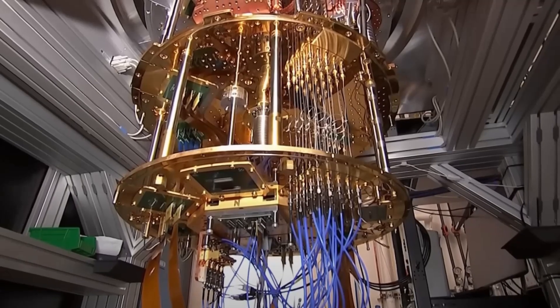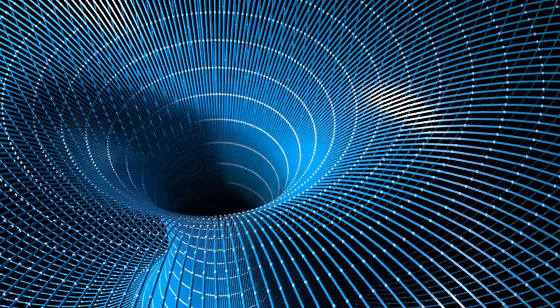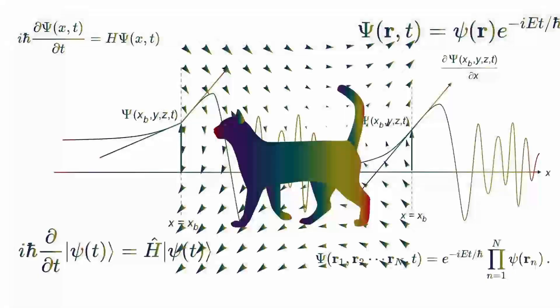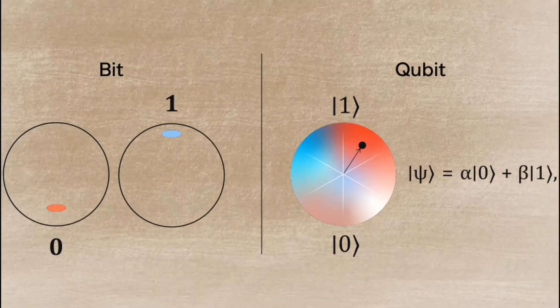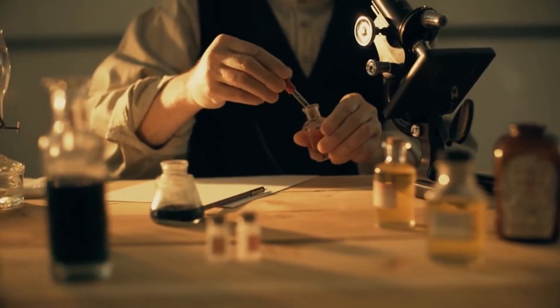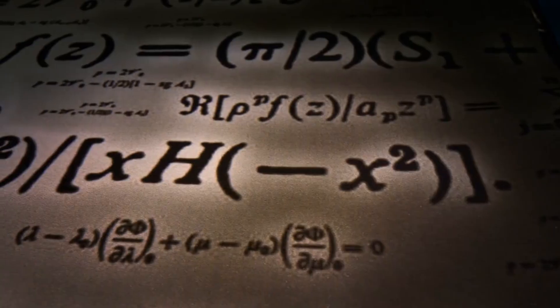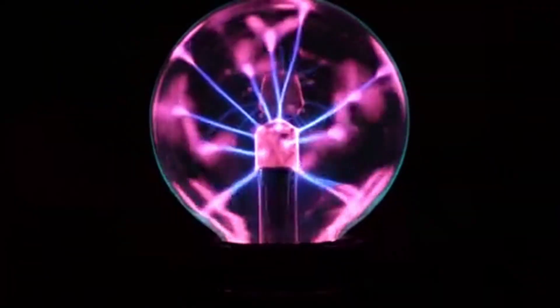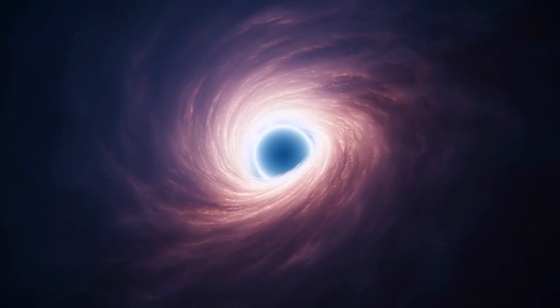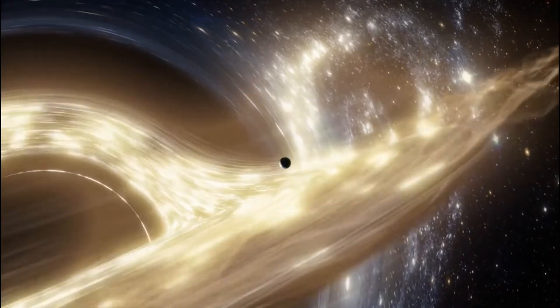Quantum computers, still in their early stages, might eventually be powerful enough to tackle the mathematical complexity of quantum gravity theories. These machines work on quantum mechanical principles themselves, so they might be naturally suited to exploring the quantum nature of spacetime. There's also growing interest in laboratory experiments that might create analog singularities. These wouldn't be real gravitational singularities, but they might exhibit similar mathematical properties using sound waves, light, or other phenomena. By studying these analogues, scientists hope to gain insights into the behavior of actual singularities.